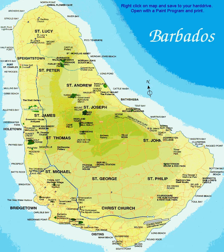It is 34 kilometers long and up to 23 kilometers wide, covering an area of 432 square kilometers. It lies about 168 kilometers east of both the countries of Saint Lucia and Saint Vincent and the Grenadines, 180 kilometers southeast of Martinique, and 400 kilometers northeast of Trinidad and Tobago.